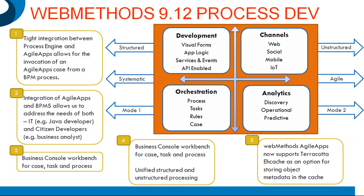From the performance perspective, WebMethods Agile Apps now supports Terracotta EH Cache as an option for storing object metadata in cache. An important under-the-hood change is that the WM Task Client page — used for task management or workflow capability — will now use Universal Messaging as the transportation mechanism. This architecture change basically enhances the performance of your workflow or business processes significantly.